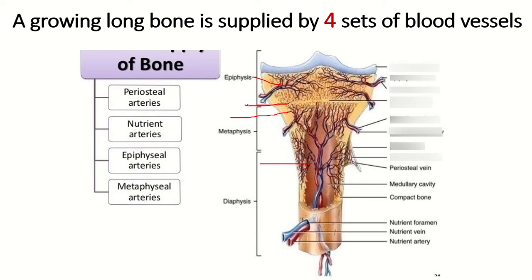The epiphysis is supplied by the epiphyseal artery, the diaphysis is supplied by the nutrient artery, and the metaphysis is supplied by the metaphyseal artery. The periosteum covers the whole bone except the articular surfaces, and these are the locations of the periosteal artery.